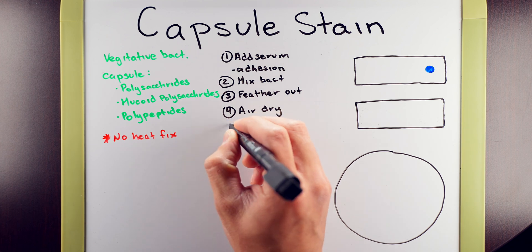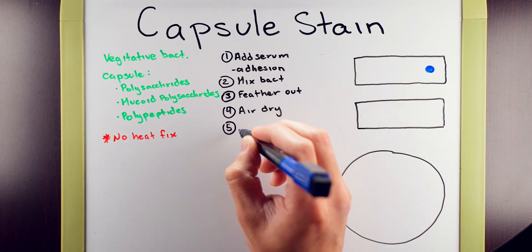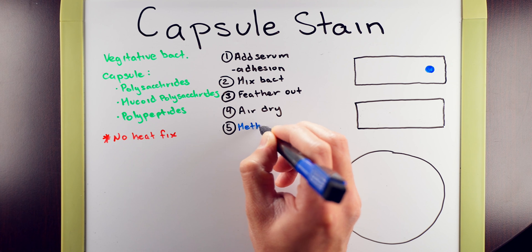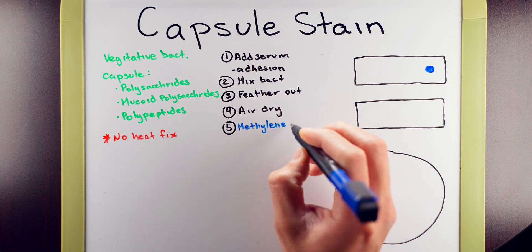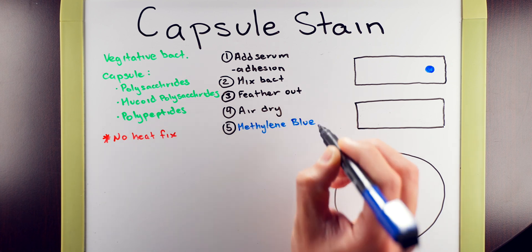Once your slide has air dried, you can add your dye. In this example, we're going to use methylene blue. For your lab, it might be different, so make sure to note what stain you're using and how long you're staining it for.